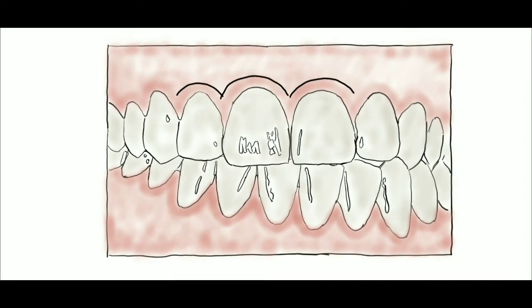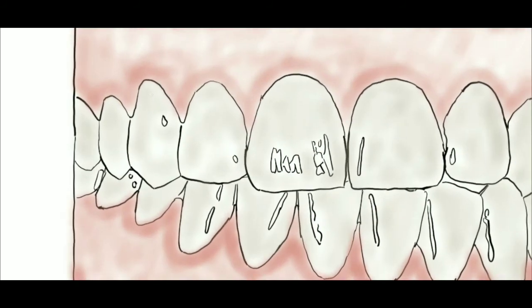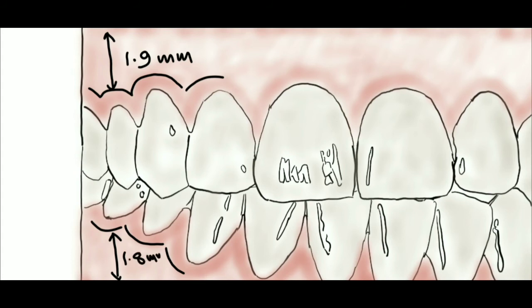It is greatest in the incisor region—that is 3.5 to 4.5 mm in the maxilla and 3.3 to 3.9 mm in the mandible. It is narrower in the posterior segment—1.9 mm in the maxillary first premolar and 1.8 mm in the mandibular first premolar.